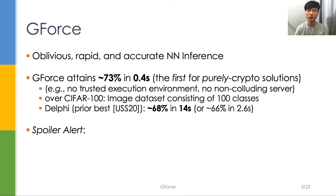GeForce can attain approximately 93% accuracy in just 0.4 seconds over CIFAR-100, an image dataset consisting of 100 classes. This is the first prior art solution achieving such good accuracy and performance. The prior best can only attain about 68% accuracy in 14 seconds.